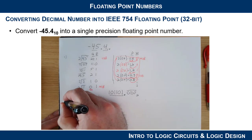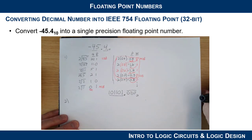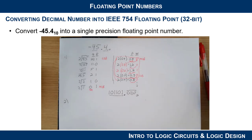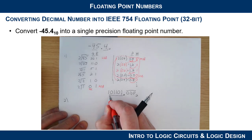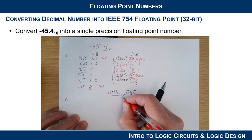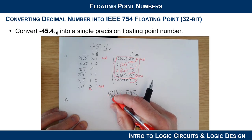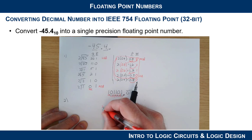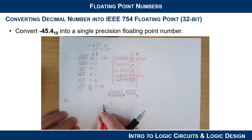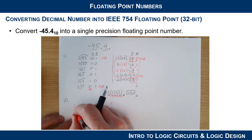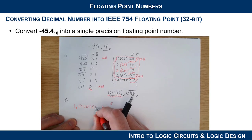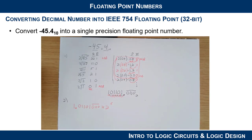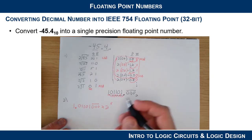Now let's convert to binary scientific notation. We shift the radix point left until only one bit remains to the left of it. Moving five places gives us an exponent of 5, so the number becomes 1.01101 0110... × 2^5, with those last four bits repeating.